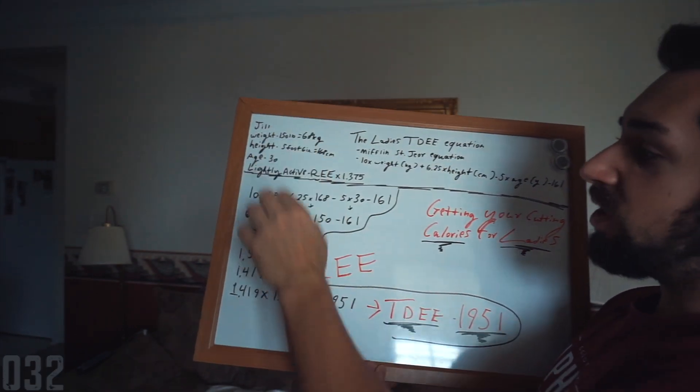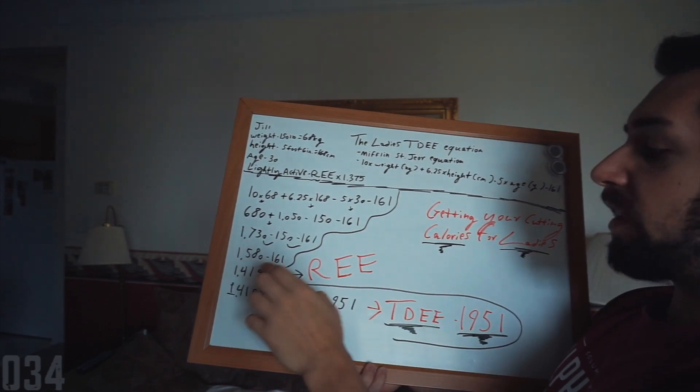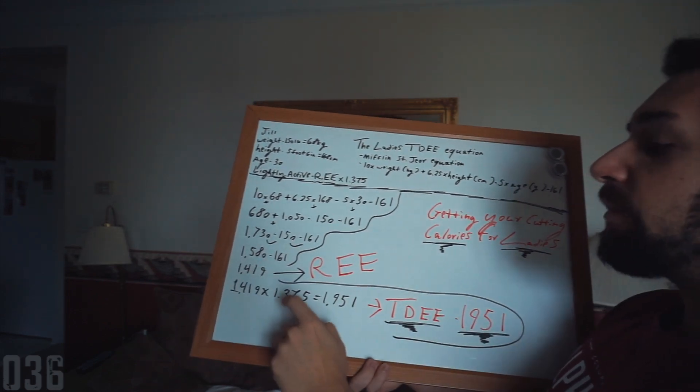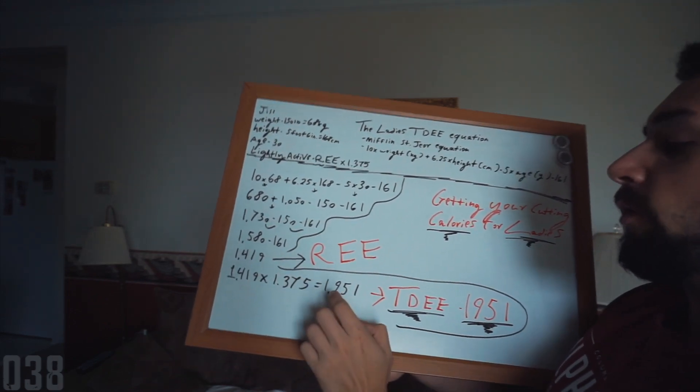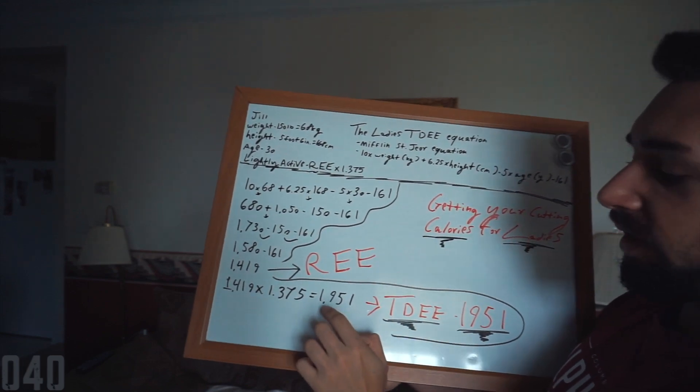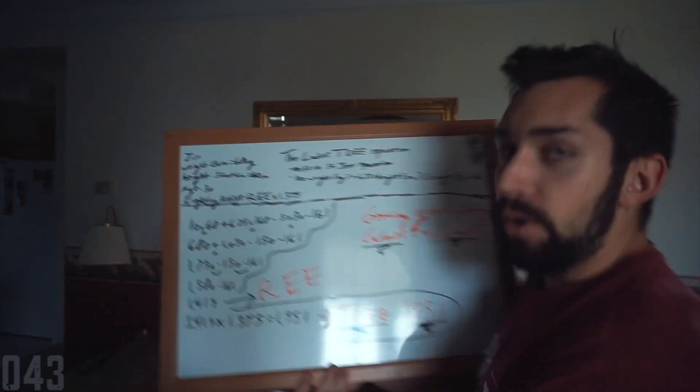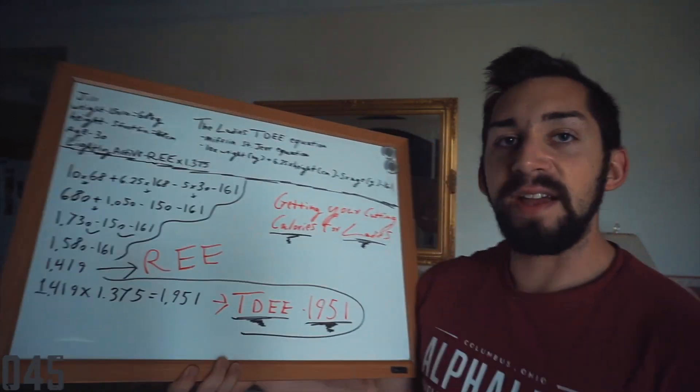Since our lady Jill is lightly active, we're going to multiply our REE times 1.375 which is going to give us a TDEE of 1951. That felt like 30 seconds or something.